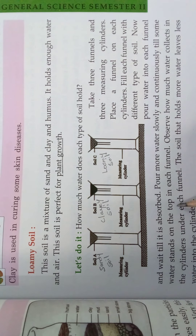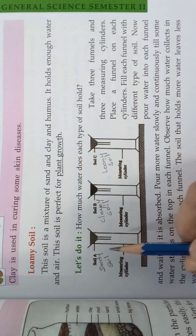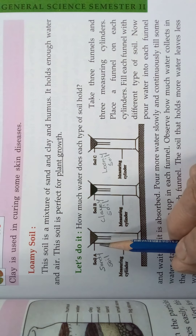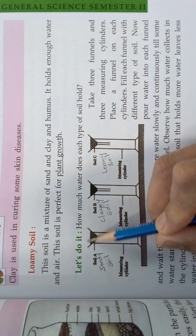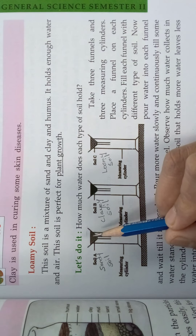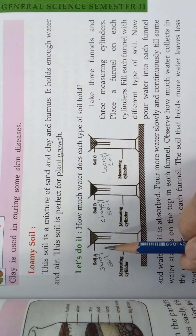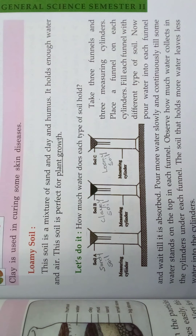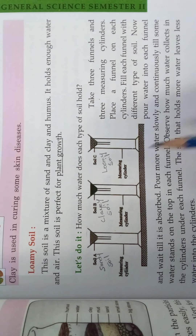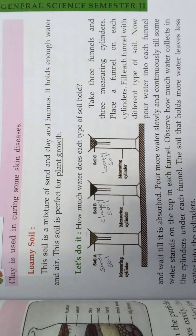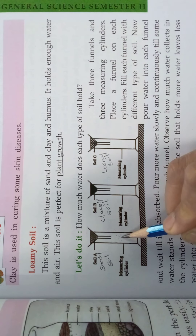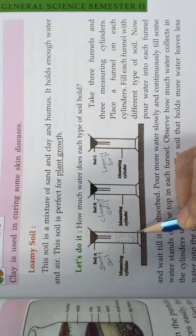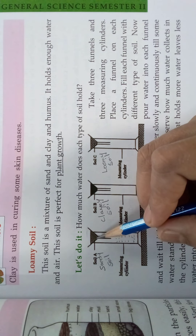Pour water slowly and continuously till some water stands on the top of each funnel. After some time, observe how much water collects in the measuring cylinders under each funnel. We may observe that if you take sandy soil, you can see the maximum water level in the measuring cylinder. Why? Because the space between the particles is more in sandy soil.